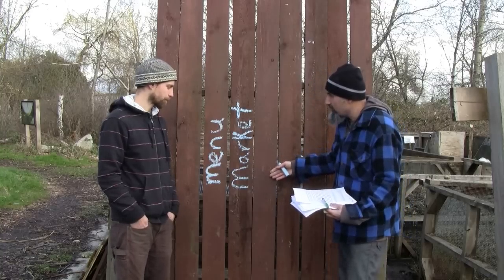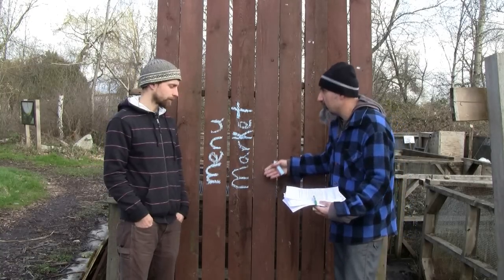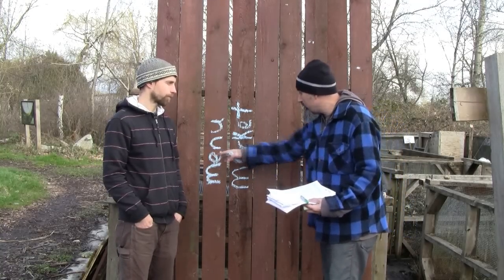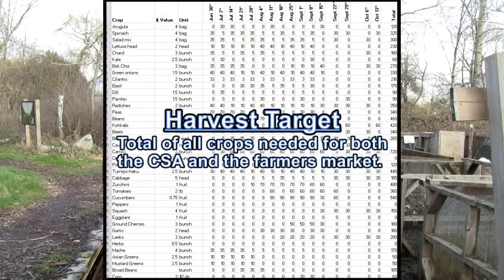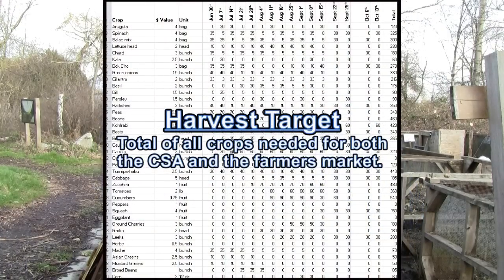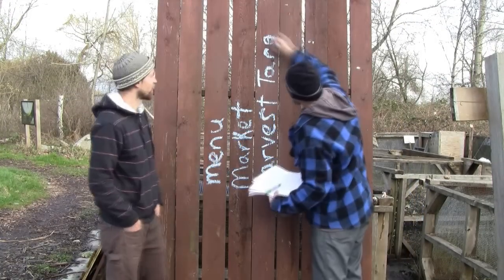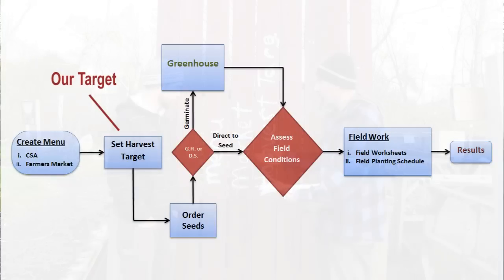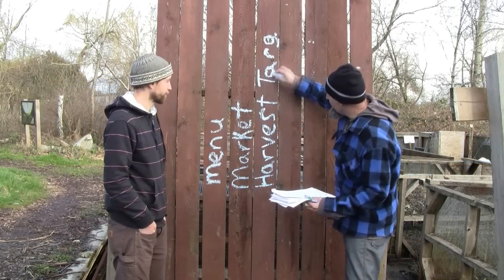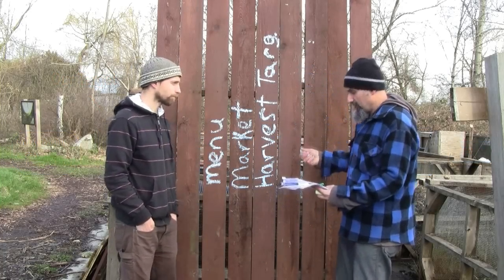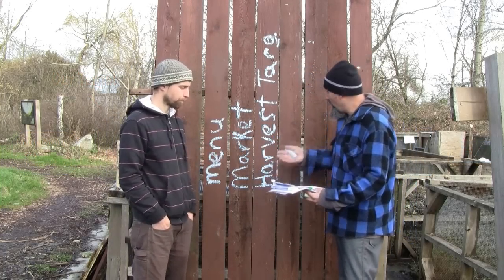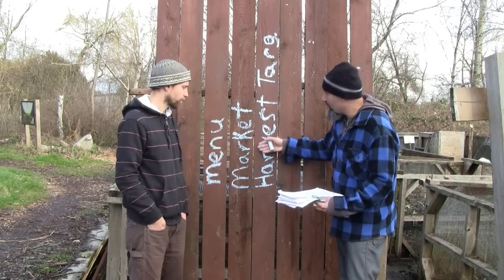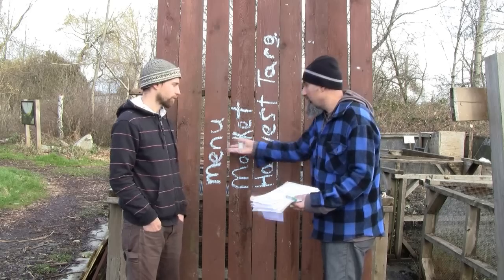Those two menus are your product — part of your business plan. The next section in the spreadsheet is your harvest target. This is what you have to harvest to be able to supply your customers, basically the CSA shares and market combined, plus or minus a certain amount depending on what's happening.